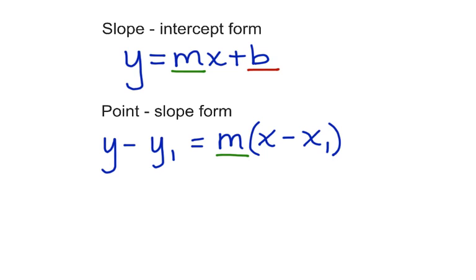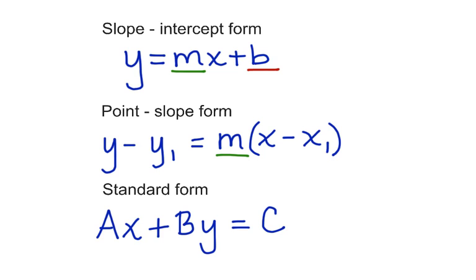Now we're going to learn a new one, and we're going to work with standard form. The standard form of a linear equation is ax plus by equals c, where a, b, and c are integers, and a and b are not both zero.